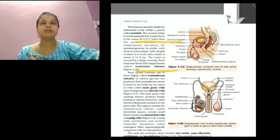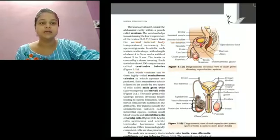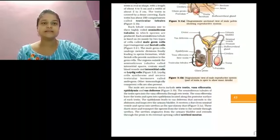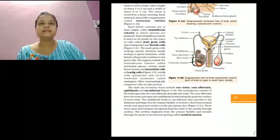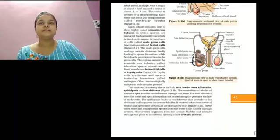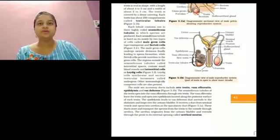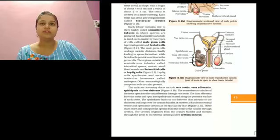Now we are discussing about the accessory duct. The accessory ducts transport the sperm from the testis to the urethra for their release outside the body. There are four accessory ducts in the male reproductive system: rete testis, vasa efferentia, epididymis, and vas deferens.